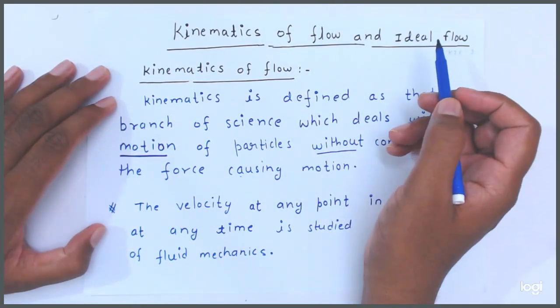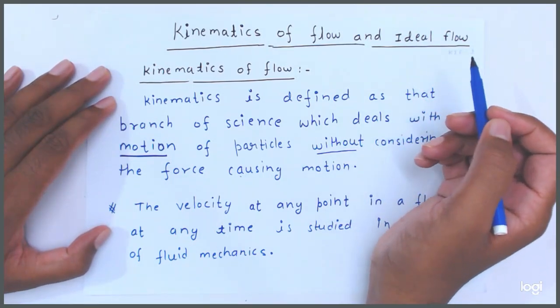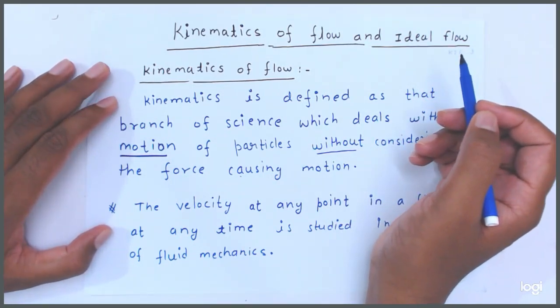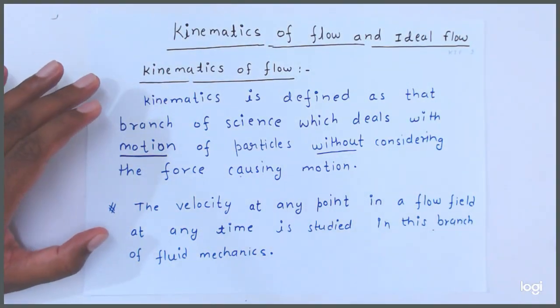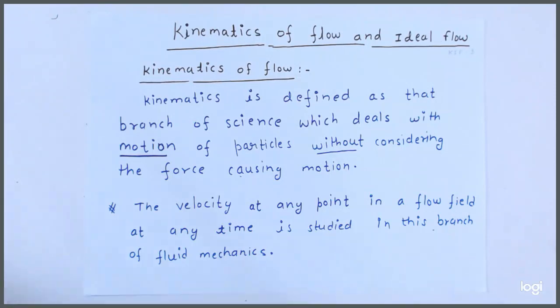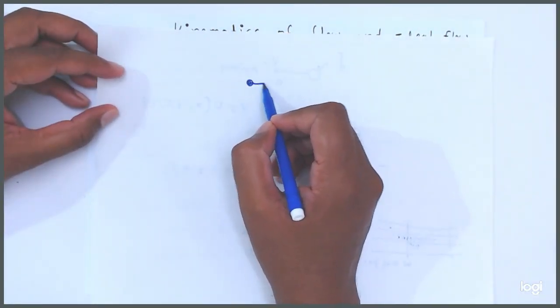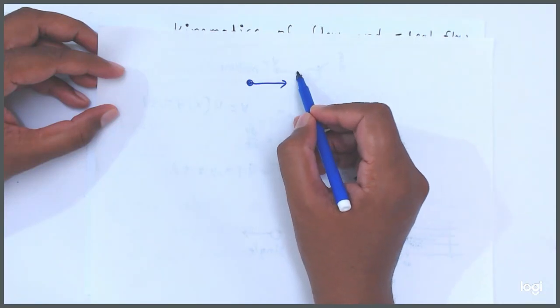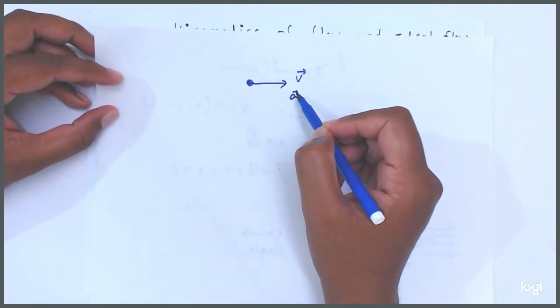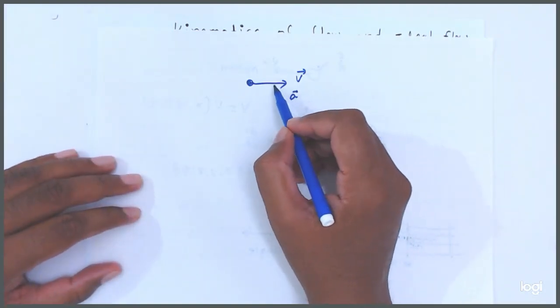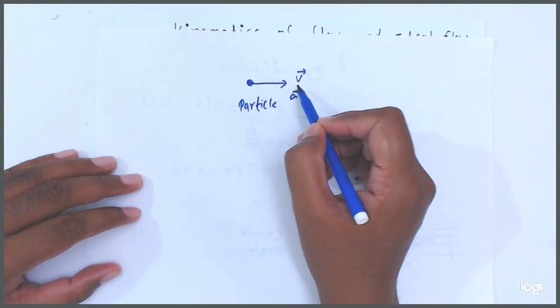In this we will discuss what is kinematics and what is the purpose of it. So friends, what is kinematics? When we are considering only motion, suppose this is the fluid particle which is moving with some velocity, velocity vector, some acceleration. So here you see this fluid particle getting motion.